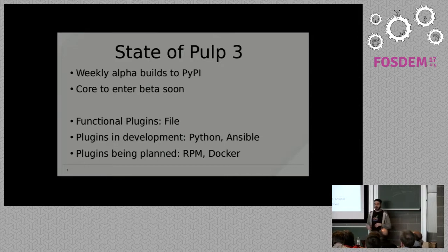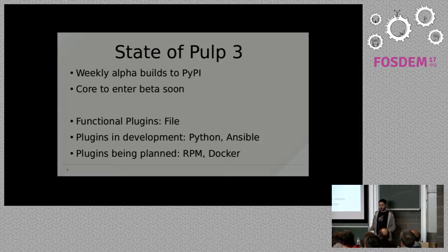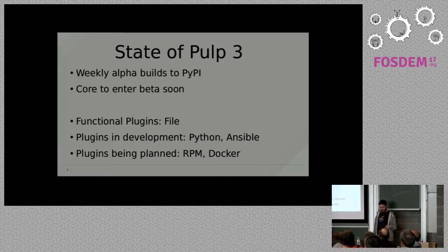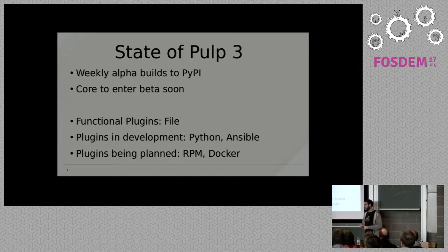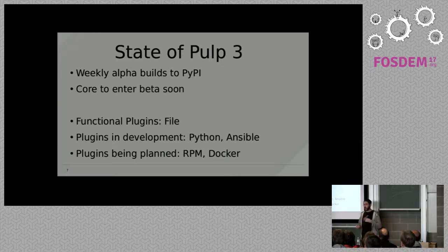Where are we with Pulp 3 now? We are in the alpha phase, building alpha builds about weekly and pushing them all to PyPI. We're hoping to enter beta in the next few months. We have one plugin that already works — the file plugin I'll be demonstrating today. The Python plugin is under development, a plugin to manage Ansible roles is also being developed, and we're in the planning phase for RPM and Docker. Roadmaps for all of these will be published in the near future.